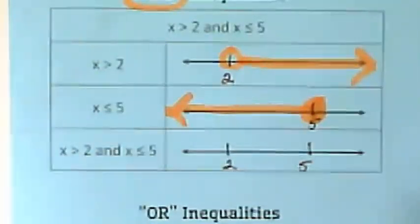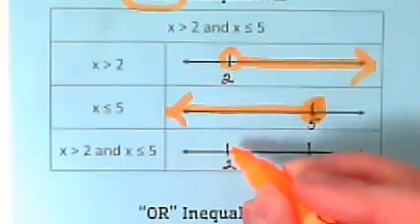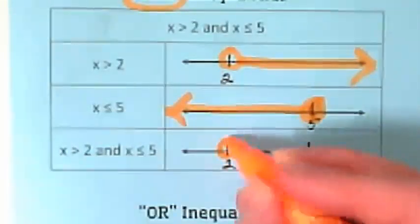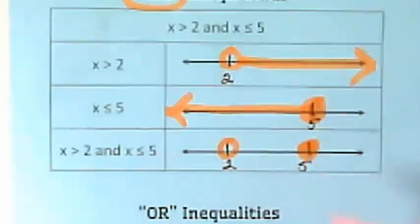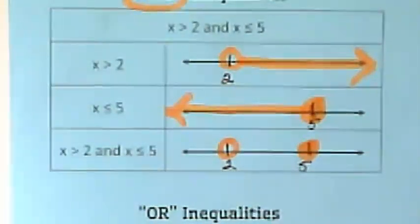So visualize what's going to happen when we combine them on one number line for our joint inequality. Open circle on the 2, closed circle on the 5, and the line is stopped in between those two points.